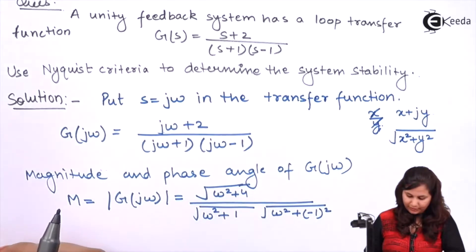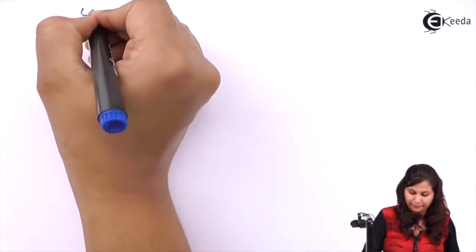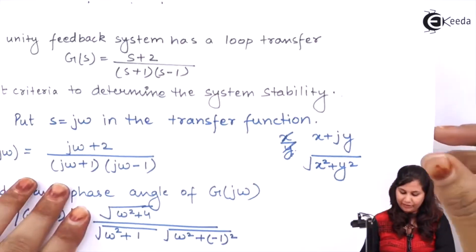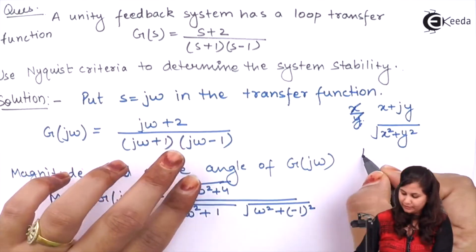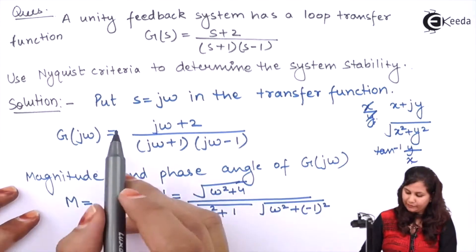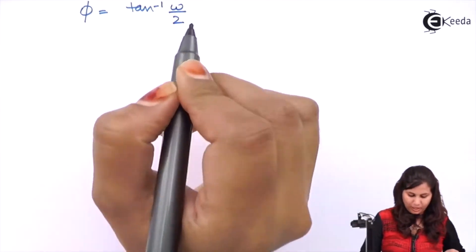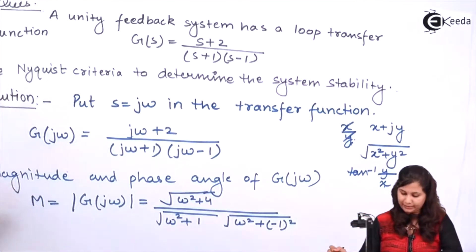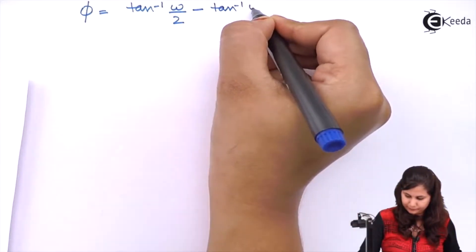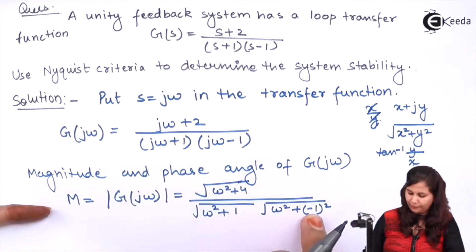The phase angle φ is represented by phi. For the numerator term (jω + 2), the angle is tan⁻¹(ω/2). For the denominator terms, we subtract tan⁻¹(ω/1) and then tan⁻¹(ω/(-1)), since the real part of (jω - 1) is -1.